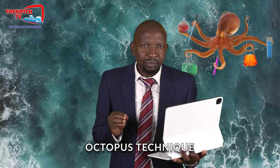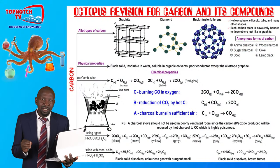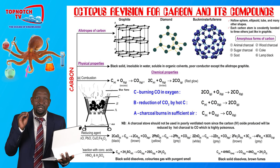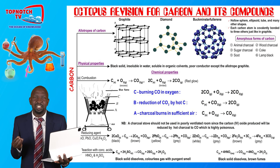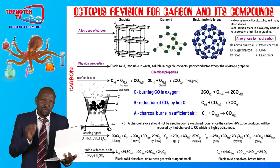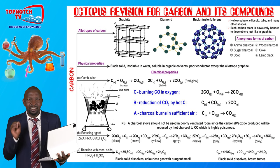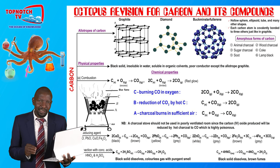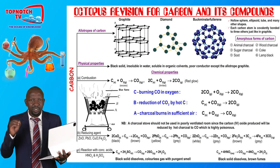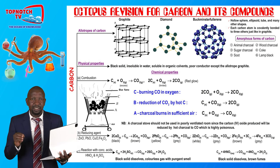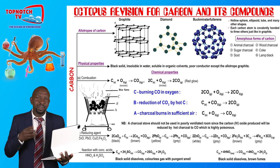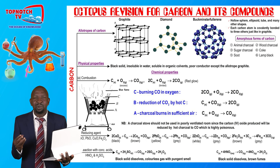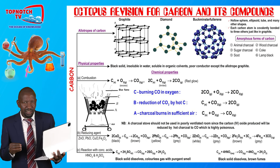With carbon, first of all, we start by looking at the allotropes of carbon. Carbon has two main naturally occurring allotropes, which are graphite and diamond. Allotropes are different crystalline forms of the same element in the same physical state. Carbon also has a synthetic allotrope, that is fullerene.